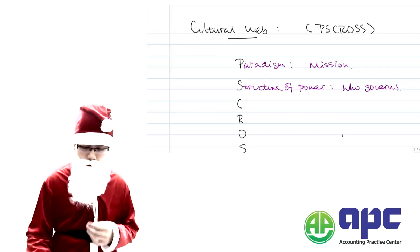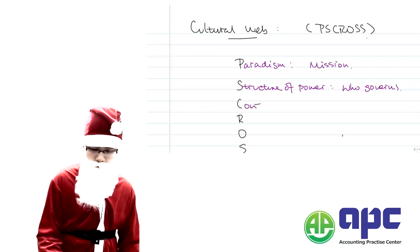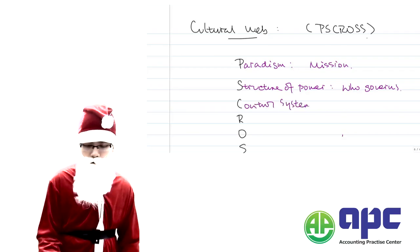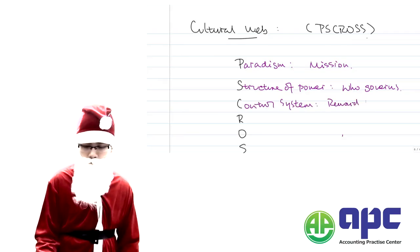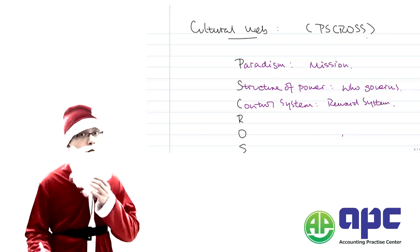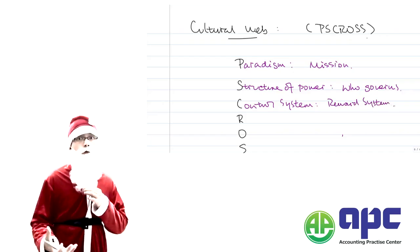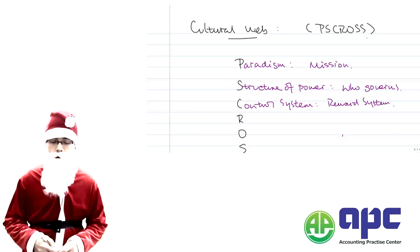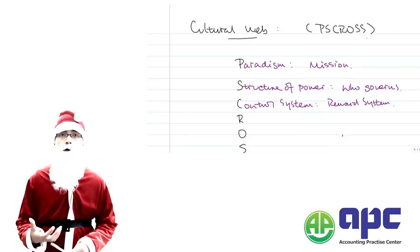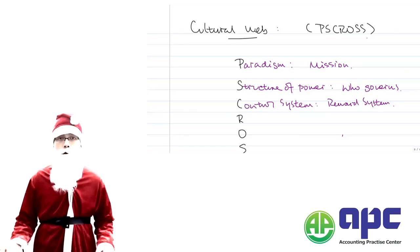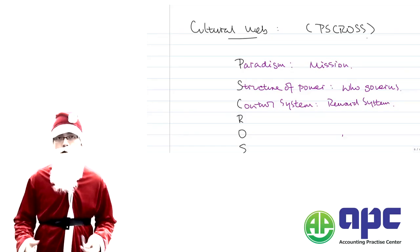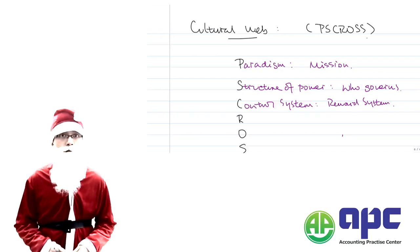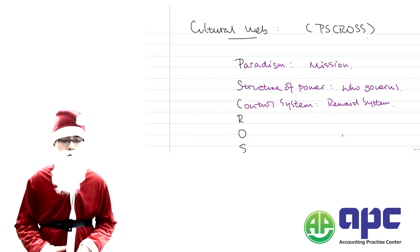C stands for the Control System. For example, we look at the reward system — whether employees, after working hard, will get a reward from the company or will be punished. This will affect their motivation within the company.